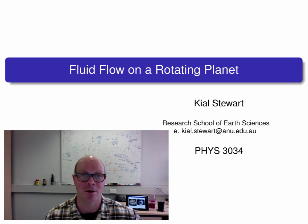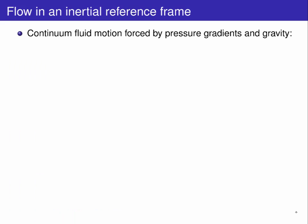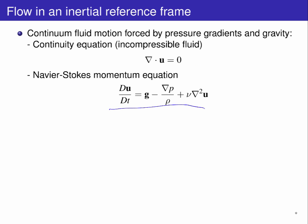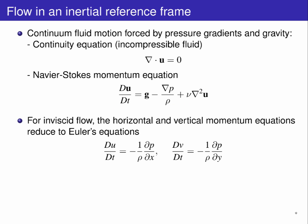We begin by performing a reference frame transformation. Up to now, the focus of the course has been on understanding fluid flows in an inertial reference frame, where fluid motions are driven by pressure gradients and gravity. You have seen the continuity equation for incompressible fluids, the Navier-Stokes momentum equation, which for inviscid flow reduces to Euler's equations in three directions, where the horizontal accelerations are simply functions of the respective pressure gradients, and the vertical equation maintains a gravitational component.